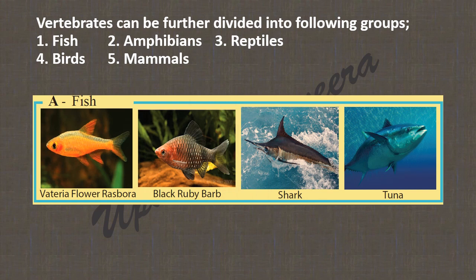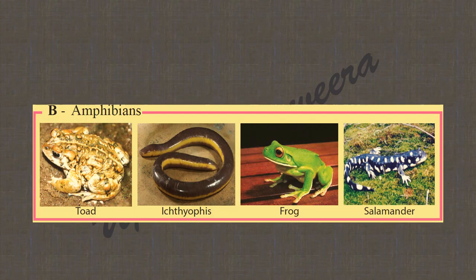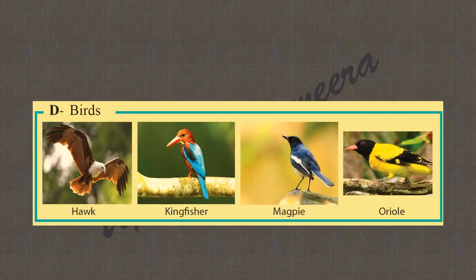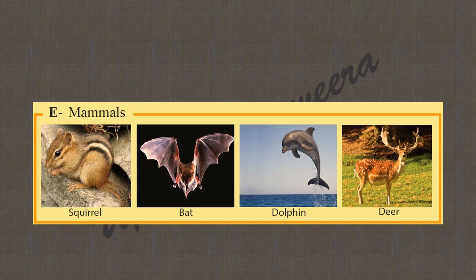Here you can see examples of fish. Here you can see examples of amphibians. By this picture you can see examples of reptiles. Here you can see examples of birds, and here mammals can be seen.